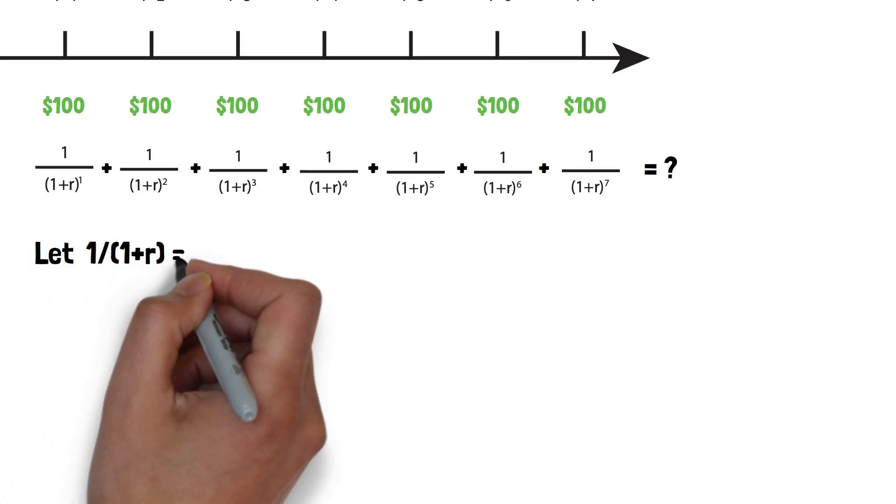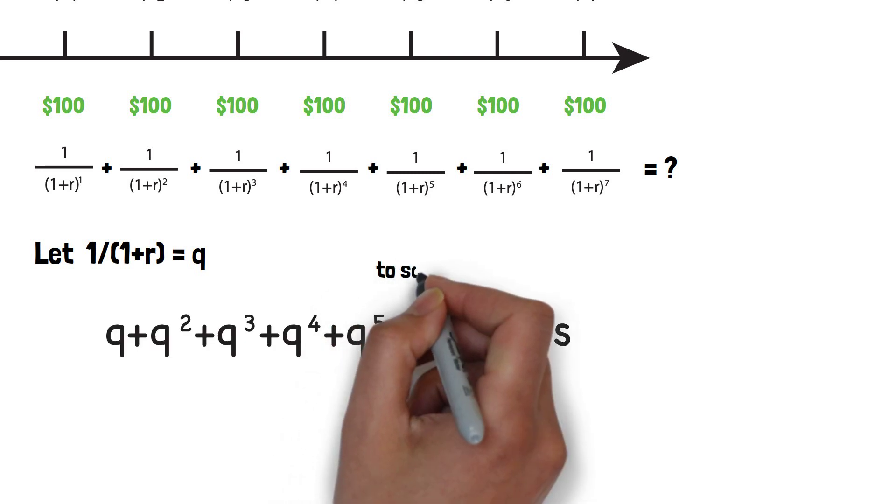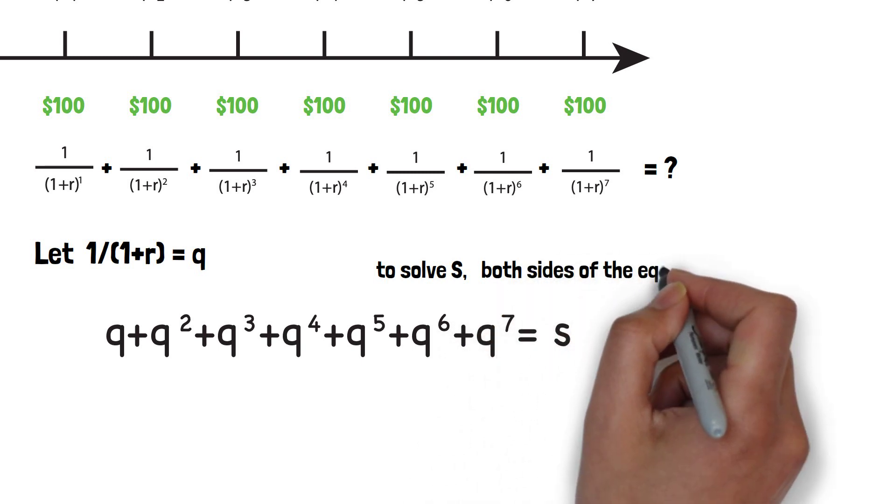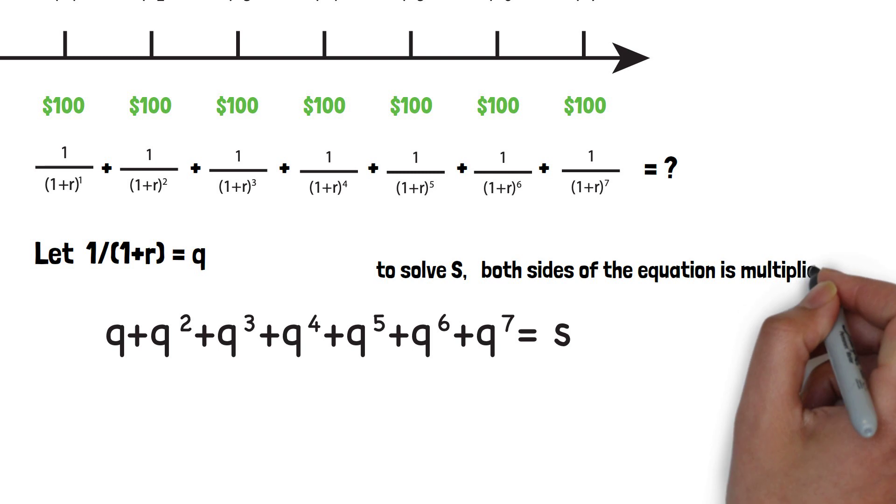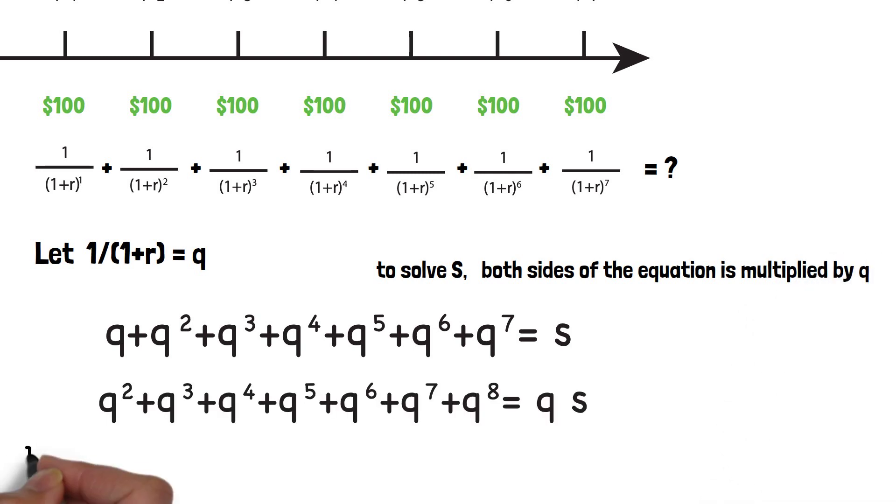Now let's simplify this equation using q equals 1 over 1 plus R. We have a new equation. To solve this S, we want to multiply q on both sides of this equation. We have a second equation.